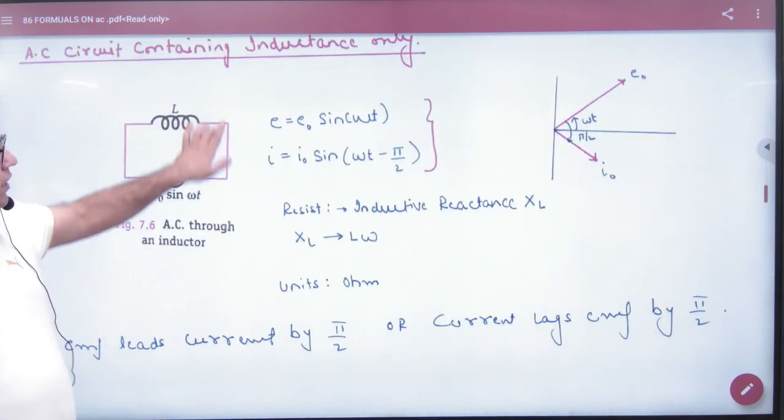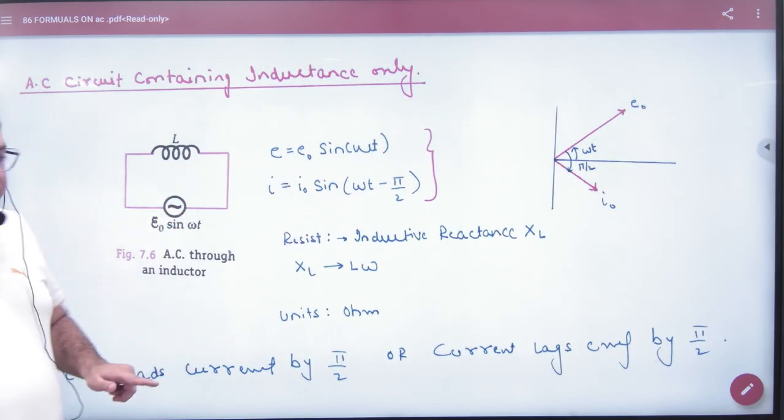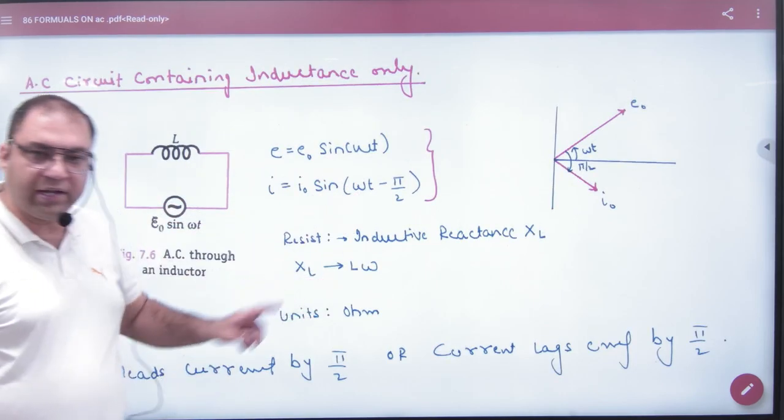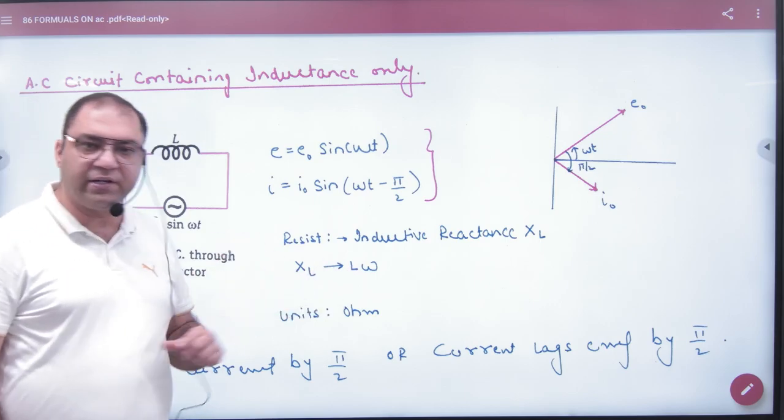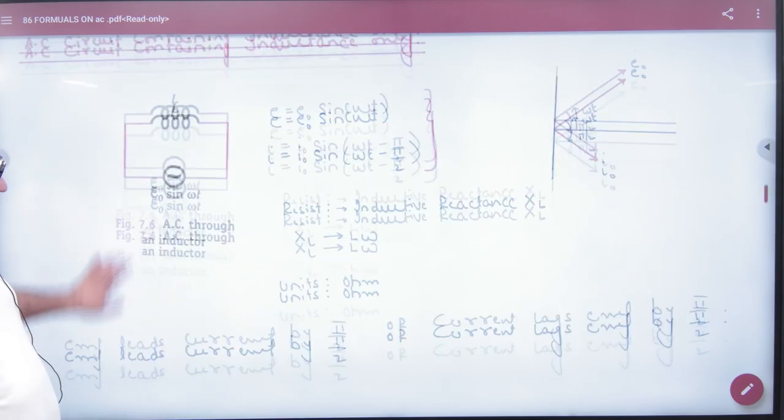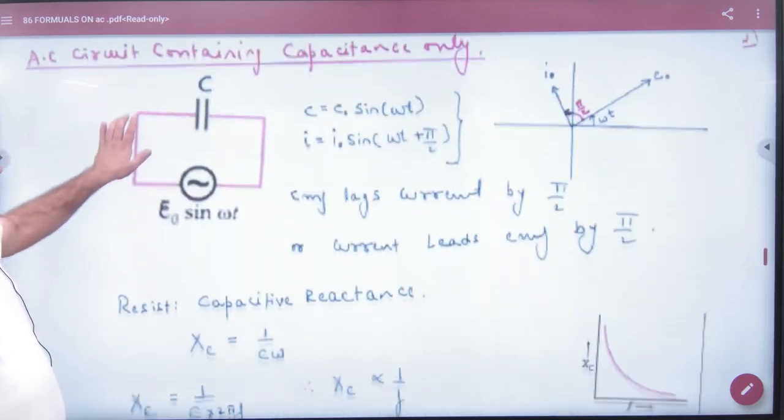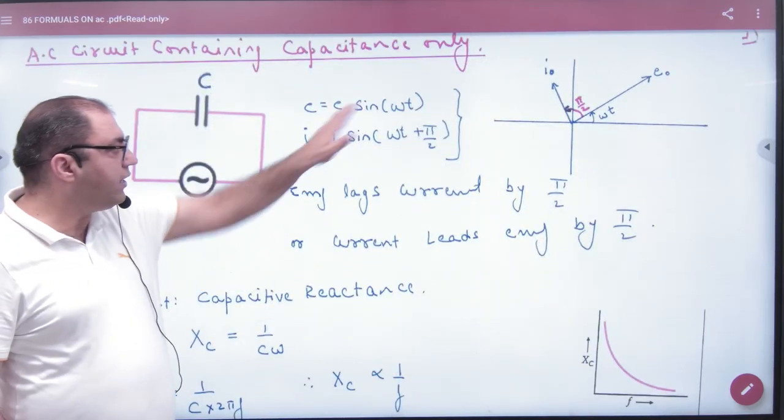In the inductor, the current lags the voltage by an angle of 90 degrees and we represent XL. The formula is XL equals L omega. Similarly, in the capacitance, current lags